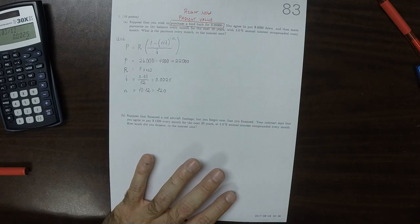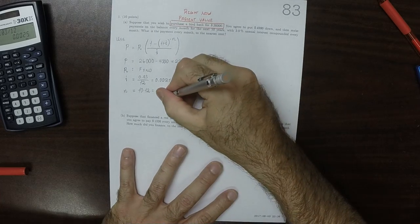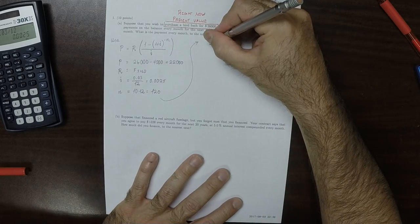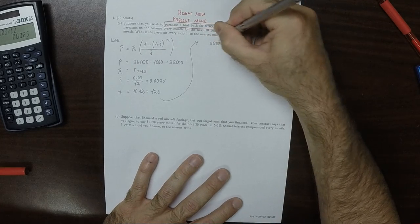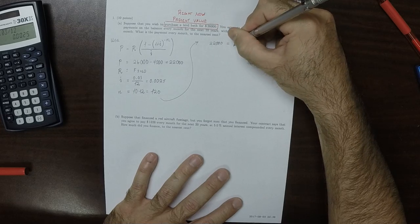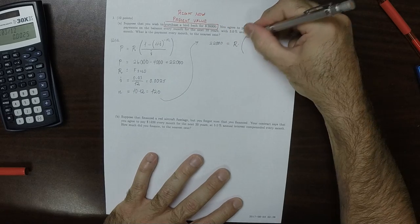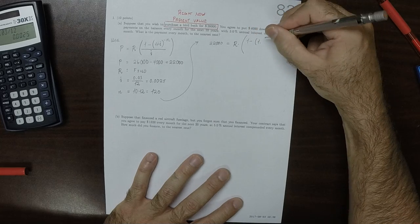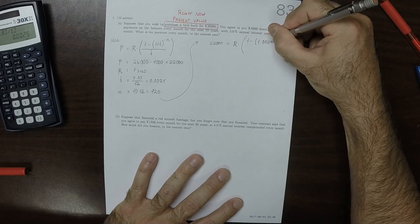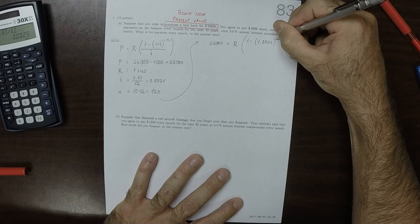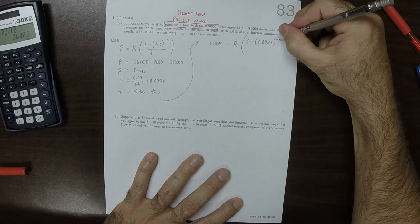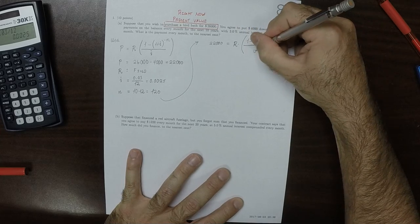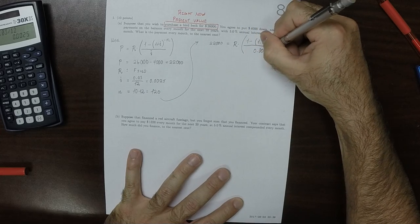What is the payment every month? So, as a result, the equation is 22,000 is equal to the unknown R multiplied by 1 minus 1.0025 to exponent negative 120 and then divide by 0.0025.